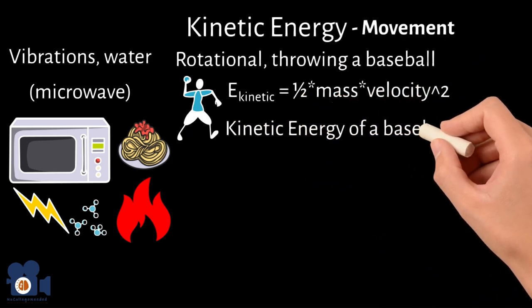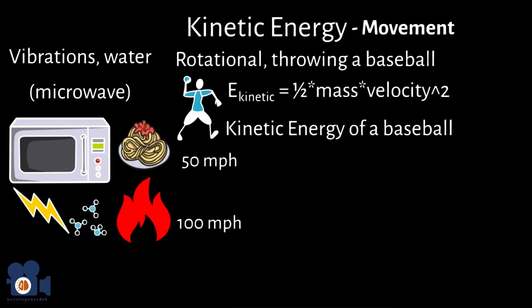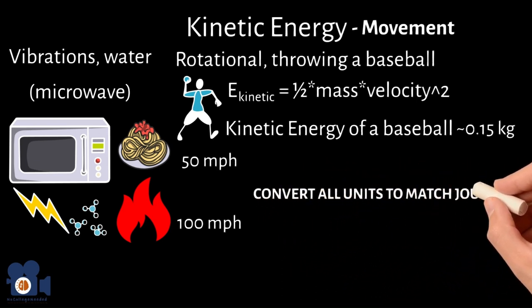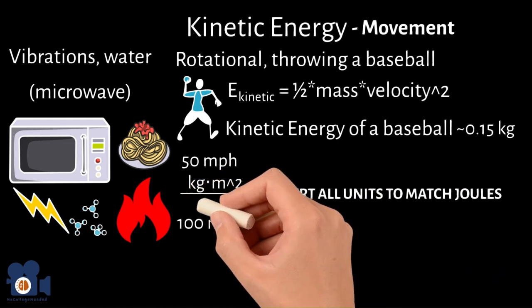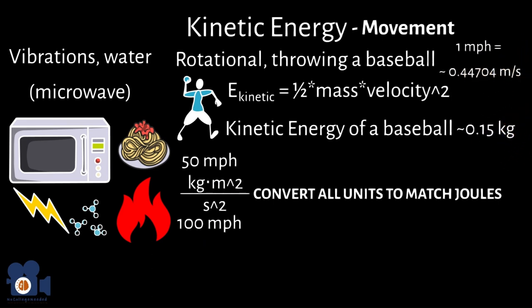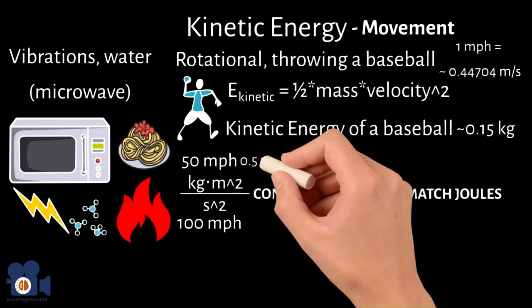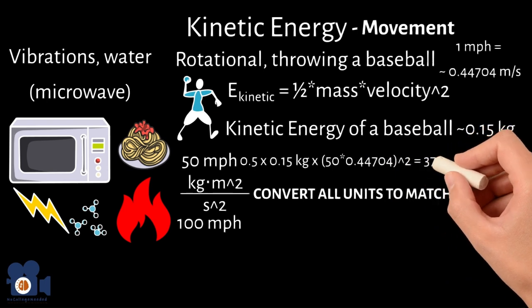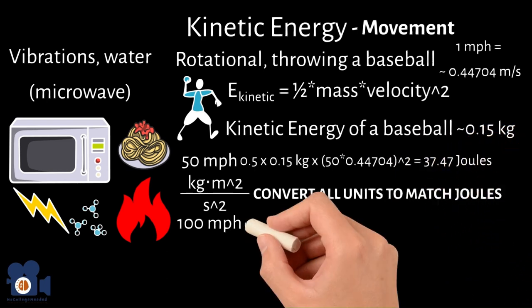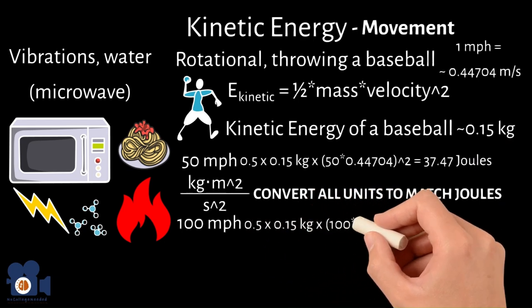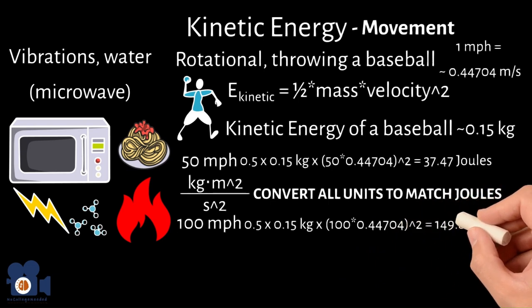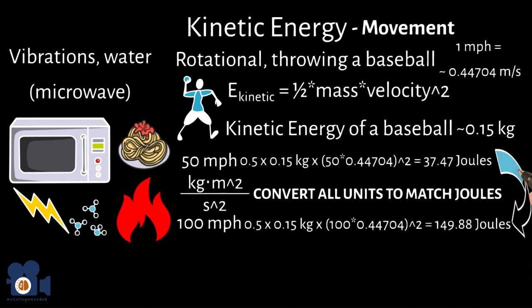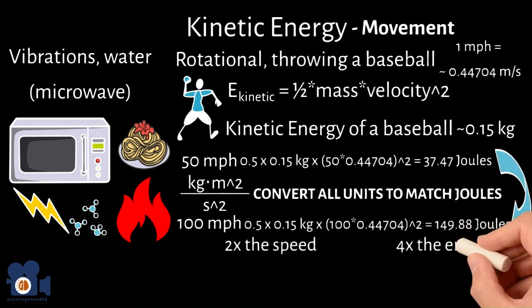Let's calculate the kinetic energy of a baseball at 50 miles per hour versus 100 miles per hour. The approximate mass of a baseball is 0.15 kilograms. Remember, we must convert all units to match joules — kilograms times meters squared divided by seconds squared. One mile per hour equals approximately 0.44704 meters per second. So the equations look like: 0.5 × 0.15 × (50 × 0.44704)² ≈ 37.47 joules, and 0.5 × 0.15 × (100 × 0.44704)² ≈ 149.88 joules. Because velocity is squared, even though one baseball moves twice as fast, it has four times as much kinetic energy.